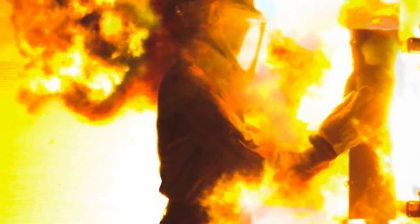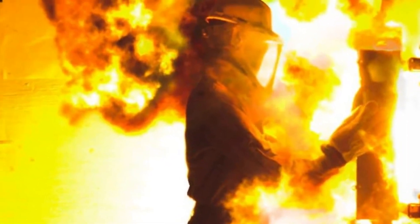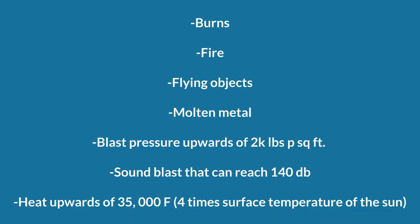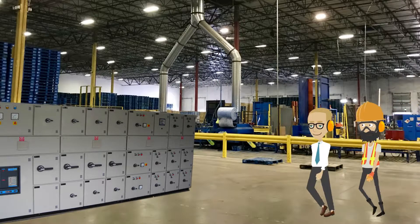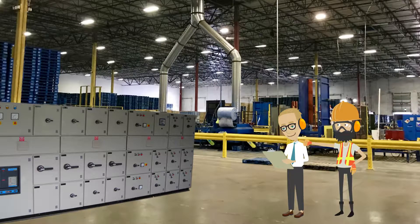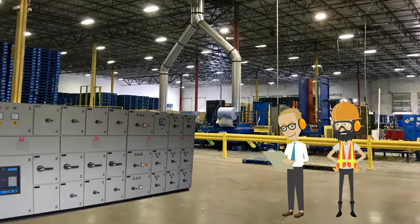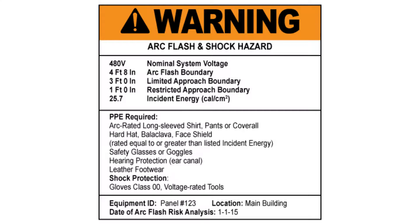Electrical arc flash can result in serious injury or death. Here are some hazards associated with arc flash. Any equipment operating at 50 volts or more and not put into a de-energized state must be evaluated for arc flash and shock protection. This will evaluate proper PPE as well as actual boundaries. After evaluation, an arc flash hazard warning label must be affixed to equipment and be readily accessible.